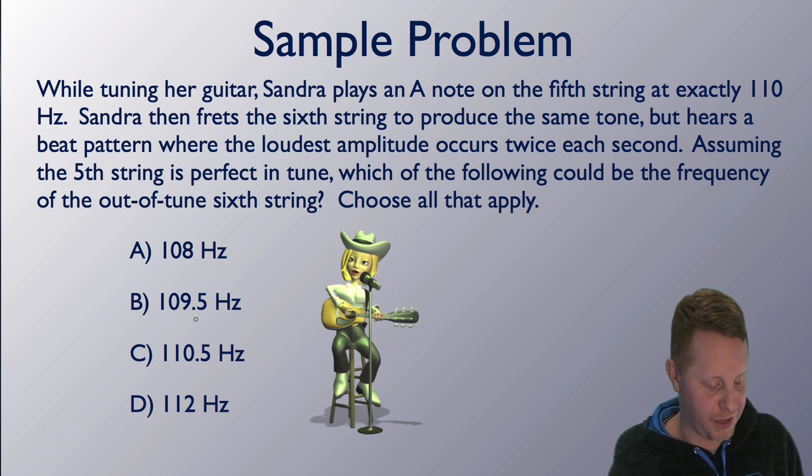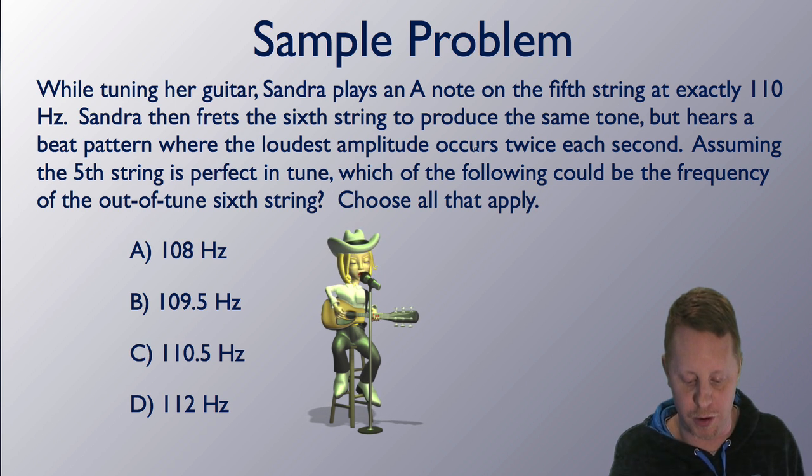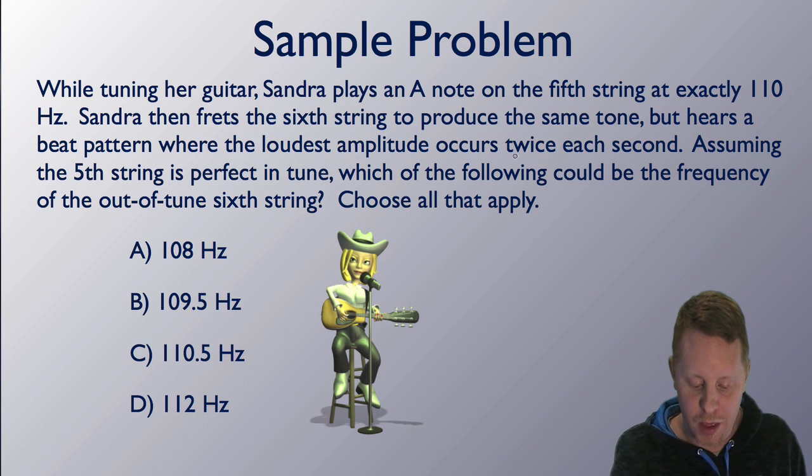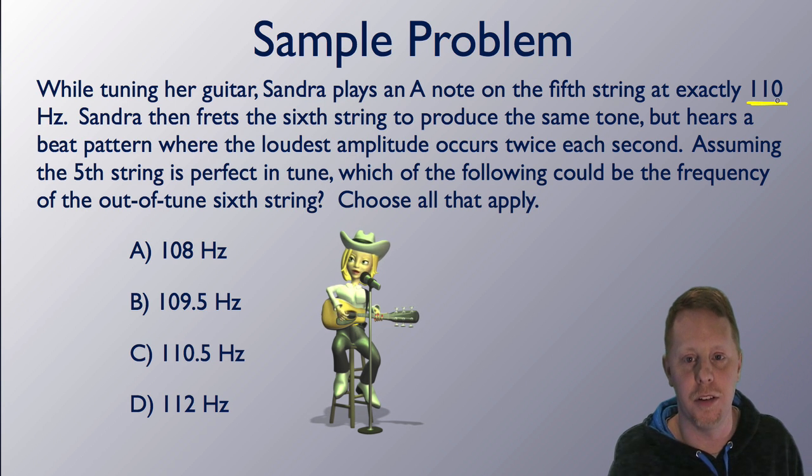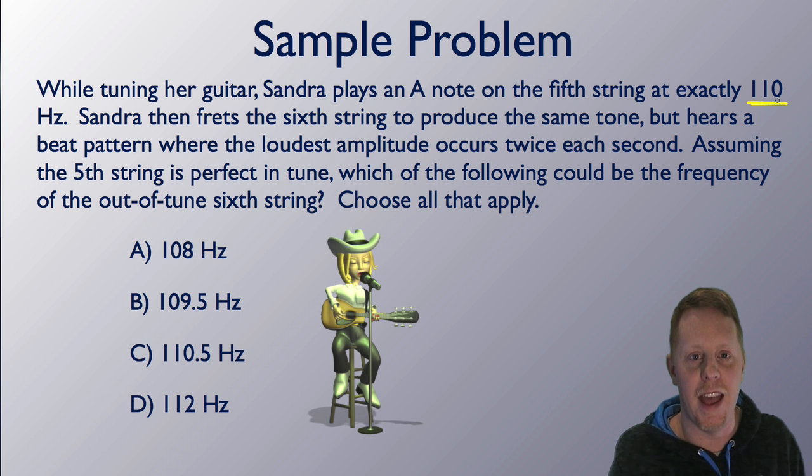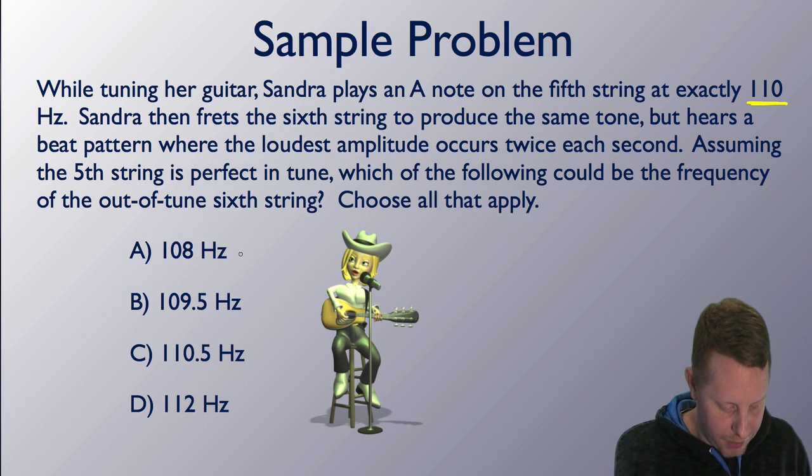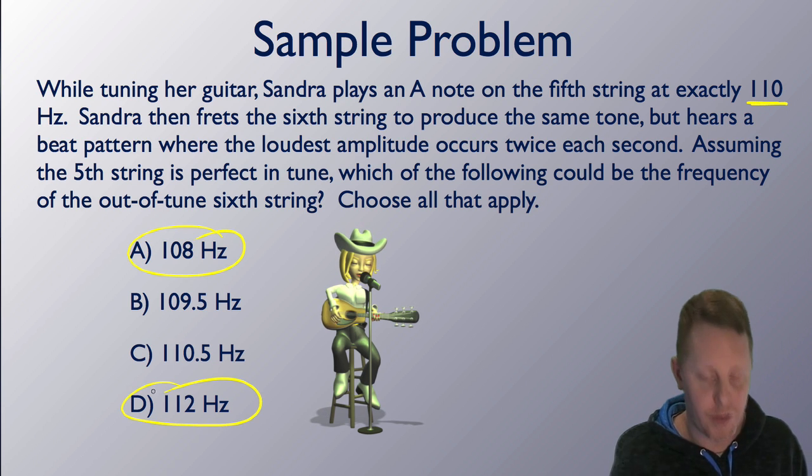All right, taking a look at a sample problem. While tuning her guitar, Sandra plays an A note on the 5th string at exactly 110 Hz. She then frets the 6th string to produce the same tone, but hears a beat pattern where the loudest amplitude occurs twice each second. So the beat frequency, 2 times per second, must be 2 Hz. Assuming the 5th string is in perfect tune, which of the following could be the frequency of the out-of-tune 6th string? Well, if the 5th is in tune at 110 Hz, and the beat frequency is 2 Hz, that means that the out-of-tune string must either be 2 Hz above or 2 Hz below. So that would give us possible answers of A or D.